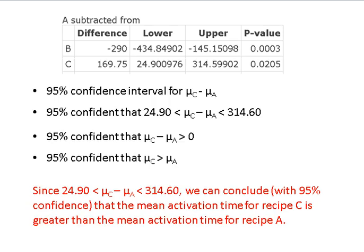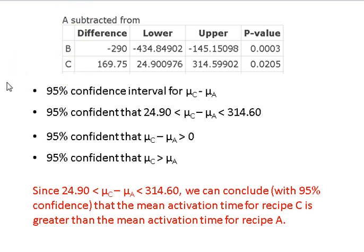Let's look at another situation. Going down the list, we have A subtracted from C — that's the confidence interval for the mean of C minus the mean of A. We're 95% confident that the difference in those population means is between positive 24.9 and positive 314.6. Notice that the bottom limit is positive and the top limit is positive, so I'm pretty sure that the difference in activation times for recipe C minus recipe A is positive — between about 25 and about 315. Doing a little bit of algebra, I'm pretty confident that the mean activation time for recipe C is greater than the mean activation time for recipe A.